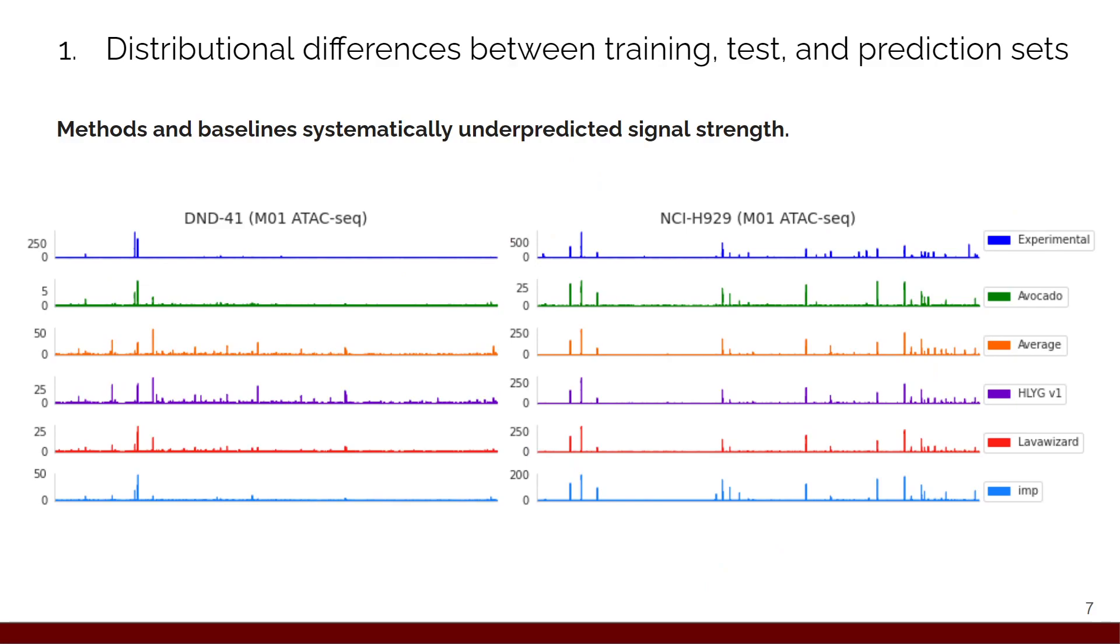In blue, we have the experimental signal from two ATAC-seq tracks. In green, we have avocado's results, which is a baseline method I developed last year. And in orange, we have the average activity, which is not a machine learning method but just a basic aggregation. Then we have the top three challenge performers. You can see that it seems like everyone's doing pretty well, that they're getting the general shape of the ATAC-seq data down right. But if you look at the precise signal values, you can see that there's something going on. Specifically, you can see that the experimental signal is exhibiting high values, whereas the predicted signal, even from the baseline methods, is much lower. What's going on here? Why is everything systematically under-predicting the signal?